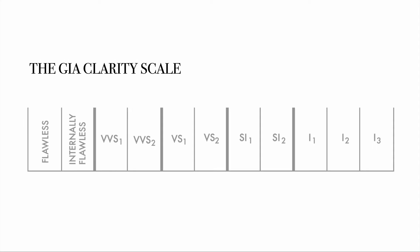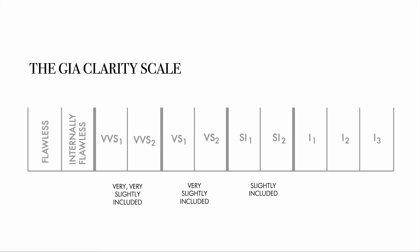Diamond clarity refers to the absence of inclusions and blemishes. This scale from GIA is used by industry professionals all around the world to define a diamond's clarity in a super precise way. The clearer a diamond is, the higher its value. The scale ranges from flawless, internally flawless, very very slightly included, very slightly included, slightly included, to included.